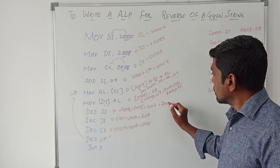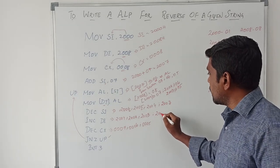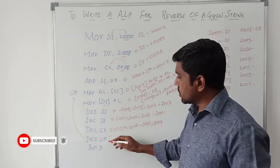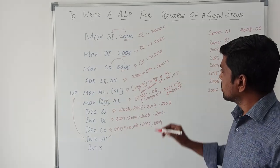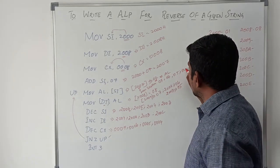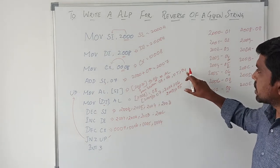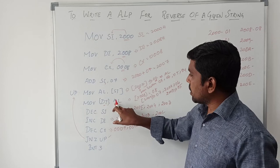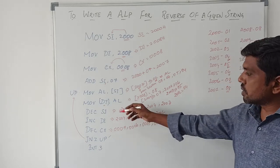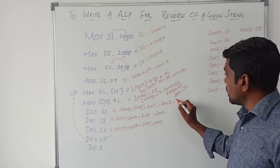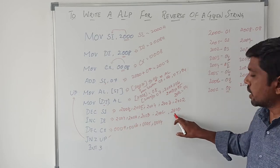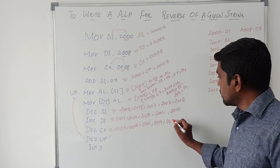Then DEC SI gives 2003, INC DI gives 200C, DEC CX gives 0004. Once again you check the condition — condition is true. SI memory location is 2003, it holds the data 04. AL value is 04. After execution of this instruction, AL register content is 04. Then MOV [DI], AL — AL value is transferred to DI. Memory location 200C holds the data 04. Once again you run the loop. DEC SI gives 2002. After INC DI you get 200D. DEC CX gives 0003. Then JNZ — condition is true, once again go to the loop.